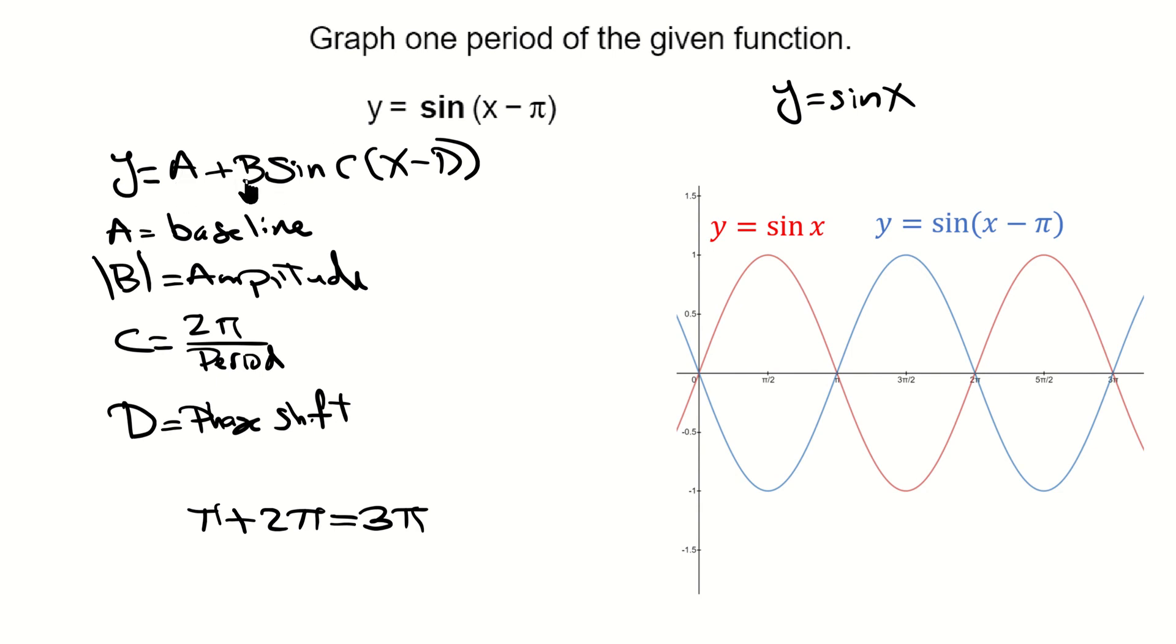Notice the amplitude is the same. The B here is 1 and it's also 1 here. The baselines for both are going to be zero because it's zero plus sine of x minus pi. This is zero plus sine x, so they have the same baseline, the same amplitude, and that's it.